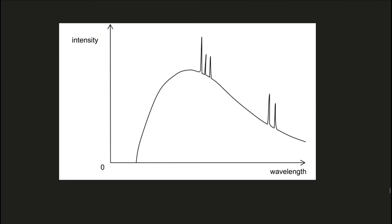This graph represents the spectrum of the X-rays produced when a metal target is hit by decelerating electrons. The spikes on the graph are characteristic of the metal being hit and correspond to the emission spectrum of the metal. The sharp cutoff where the line meets the x-axis represents the shortest wavelength of the X-rays released — the shorter the wavelength, the higher the energy of the X-rays. This wavelength represents the highest energy X-ray that can be released, where all of the energy of the electron is converted into the energy of the X-ray photon.